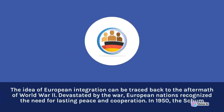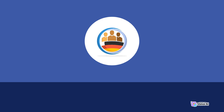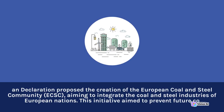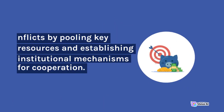The idea of European integration can be traced back to the aftermath of World War II. Devastated by the war, European nations recognized the need for lasting peace and cooperation. In 1950, the Schuman Declaration proposed the creation of the European Coal and Steel Community (ECSC), aiming to integrate the coal and steel industries of European nations. This initiative aimed to prevent future conflicts by pooling key resources and establishing institutional mechanisms for cooperation.